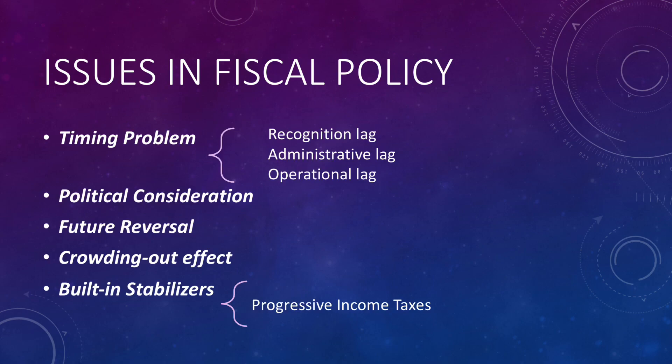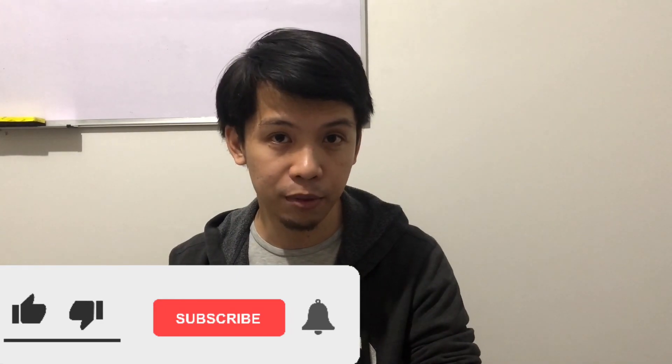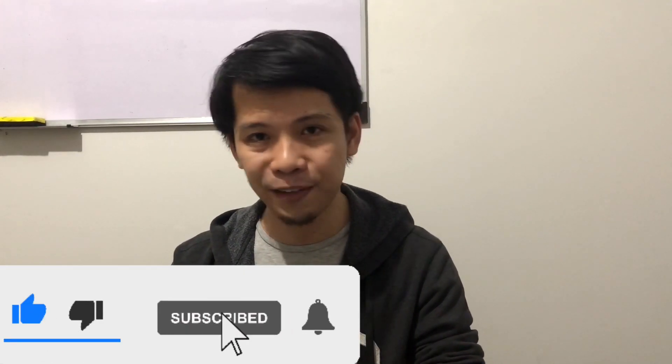Finally, there are built-in stabilizers which act automatically without the need for fiscal policy. For example, with progressive income taxes, as everyone becomes wealthier, the tax tables will automatically tax more, rather than requiring additional policies to be set by government. That would be all for fiscal policy.